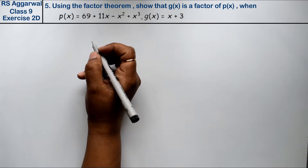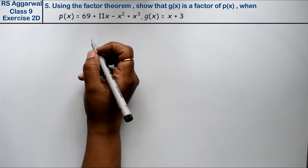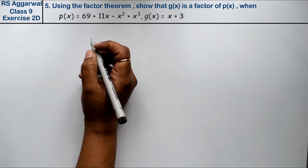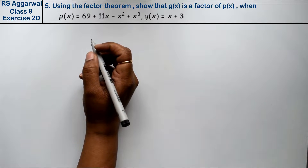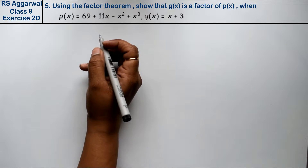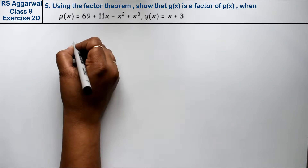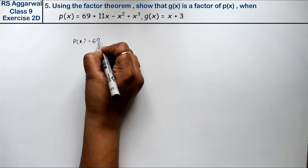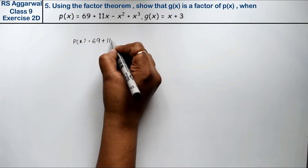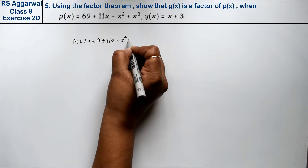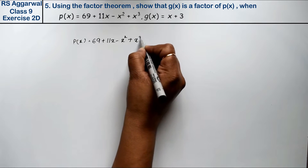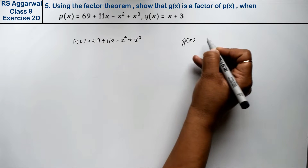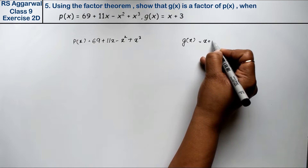Let's do question number five of exercise 2D on polynomials. The question says: using the factor theorem, show that g(x) is a factor of p(x), where p(x) equals x³ minus x² plus 11x plus 69, and g(x) equals x plus 3.